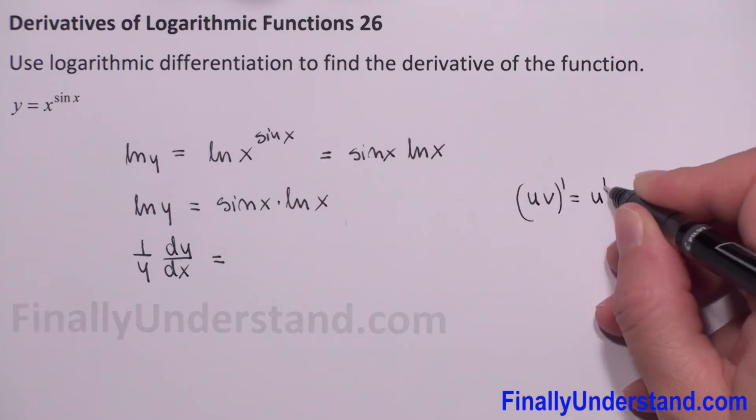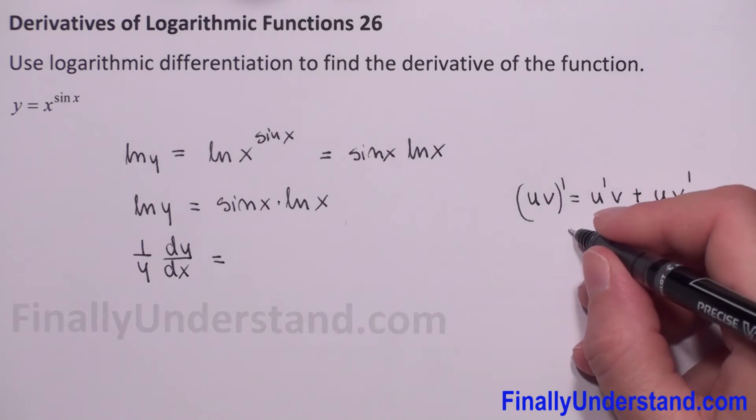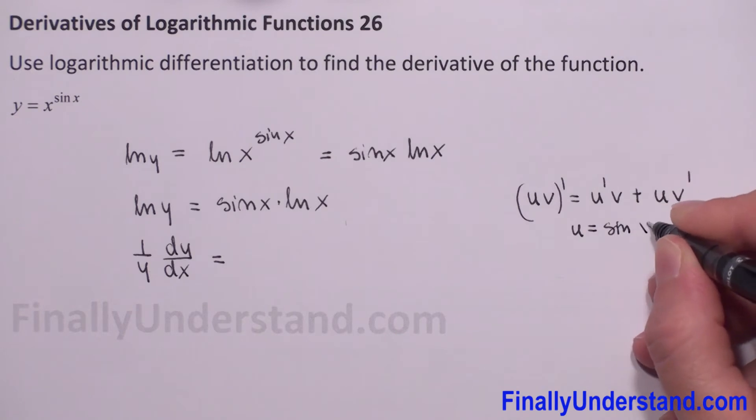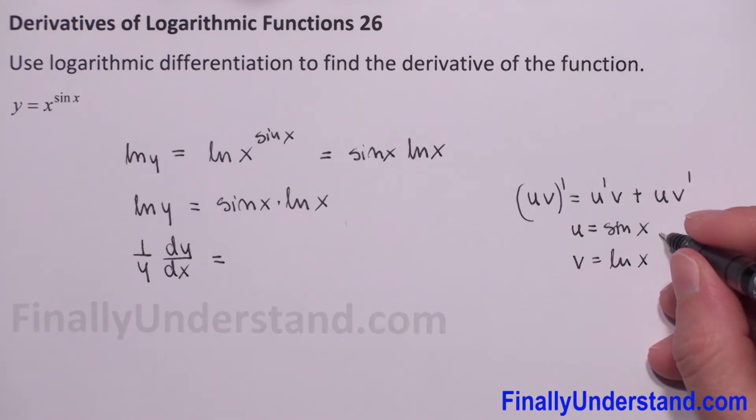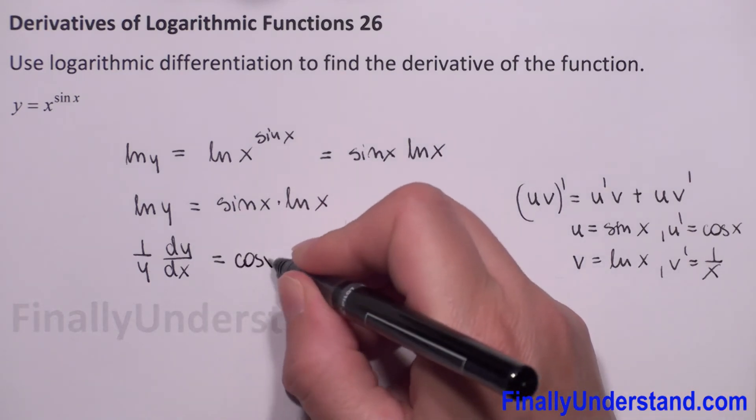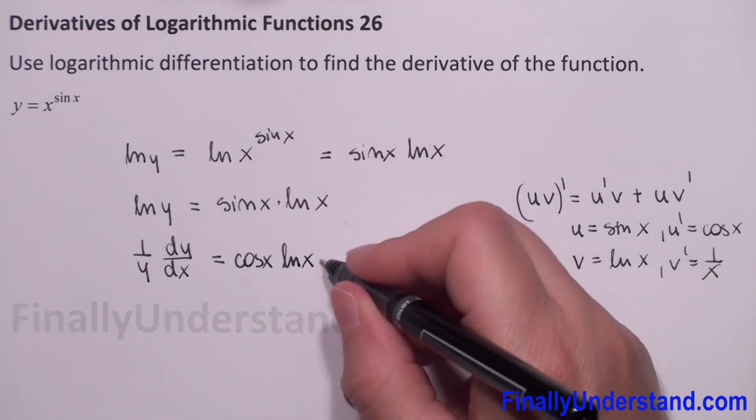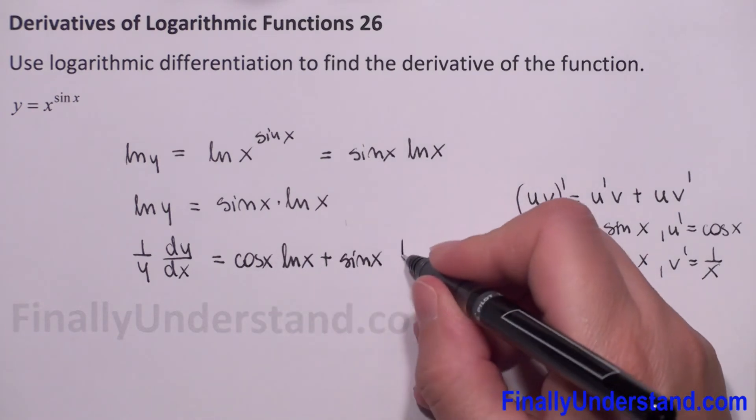In our case, u is equal sine of x, v is equal natural log of x. Derivative of sine is equal cosine of x. Derivative of natural log of x is equal 1 over x. So we will have, we just find derivative of sine is cosine times natural log of x plus sine of x times derivative of natural log of x is 1 over x.